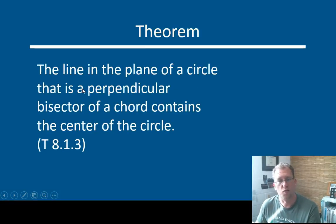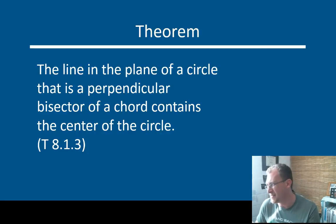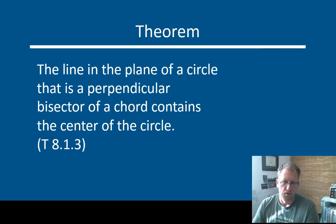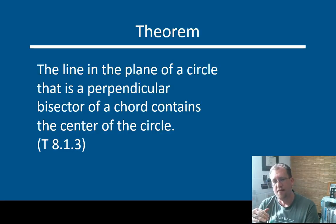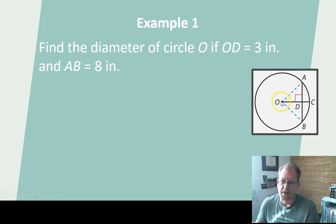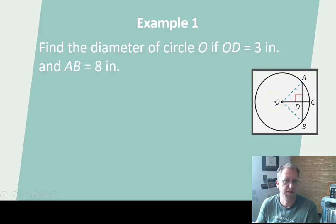The line in the plane of a circle that is the perpendicular bisector of a chord contains the center of the circle. That's a little bit harder to think about. You have a chord and a line going through the circle, and it is a perpendicular bisector of that chord — then that line must contain the diameter, and it must contain a radius, so it must contain the center of the circle. Just like a radius must bisect the chord, if it's a line going through and it bisects a chord, then it must have the radius in it, which means it must contain the center of the circle.